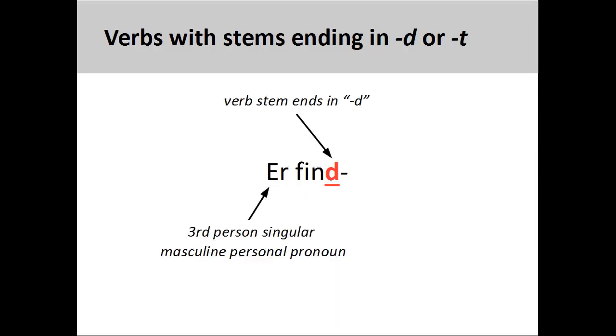To conjugate verbs ending in '-d' or '-t', we follow the same process as described earlier, but with one extra step. Remove the infinitive ending for the verb 'finden', to find. Notice that the verb stem ends in '-d', and determine both the number and person of the subject.